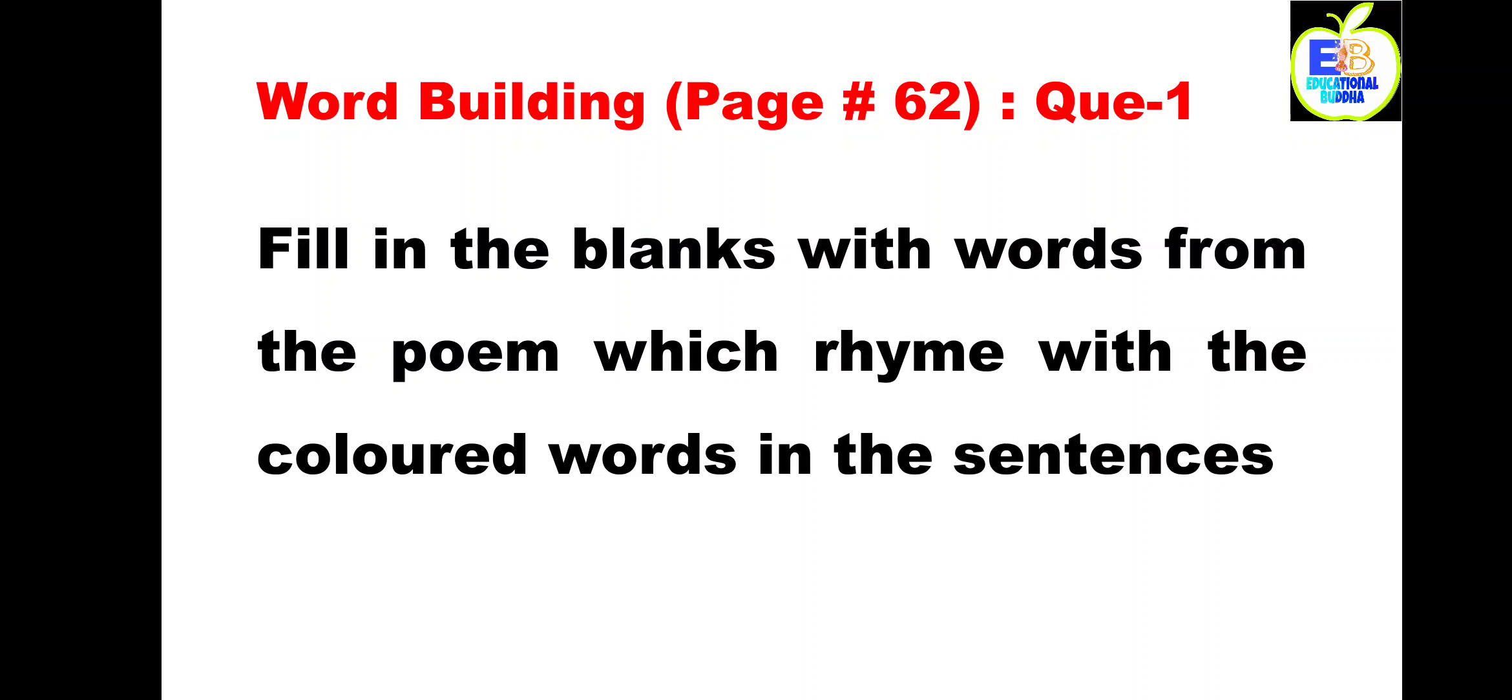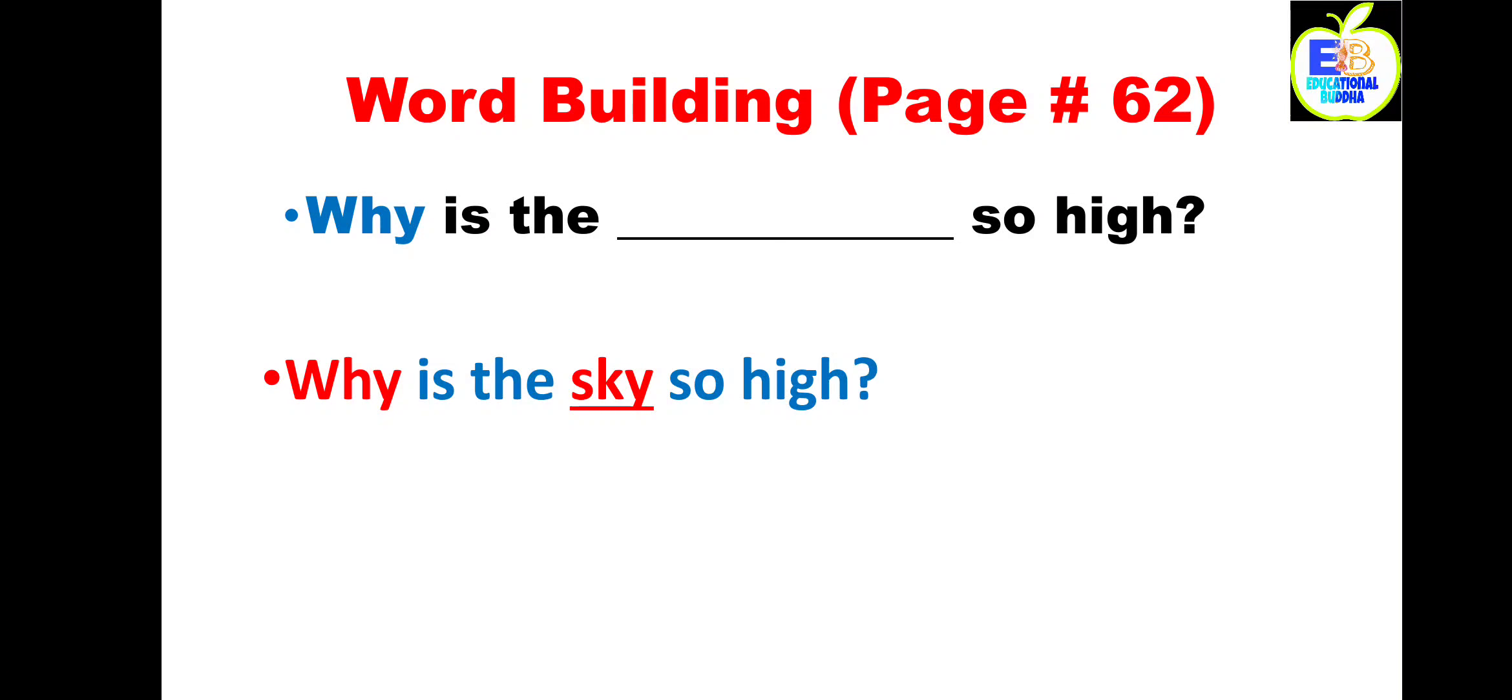So come to the questions. Our first question is: why is the blank so high? So you can easily find the answer of this blank. What is the rhyming word of why? The rhyming word of why is sky. So the answer is: why is the sky so high? Next question is: do you know the color of blank? The rhyming word of no is blue, so the answer is: do you know the color of blue?